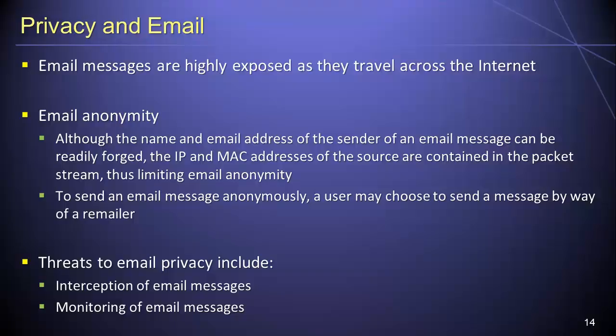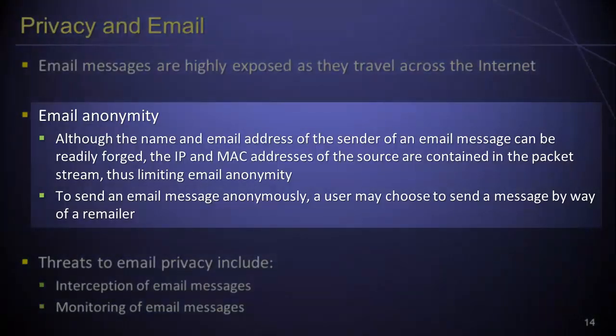Email messages are highly exposed as they travel across the Internet, and hence represent a serious threat to personal privacy. By default, email messages are not encrypted. As such, email privacy can be compromised at any point while an email message is in transit. Although the name and email address of the sender can be easily forged, the IP and MAC addresses of the source are contained in the packet stream, thus limiting email anonymity. A user who wishes to send an email message anonymously can do so by using a remailer.